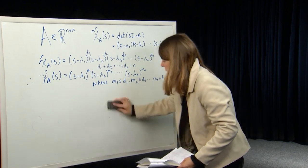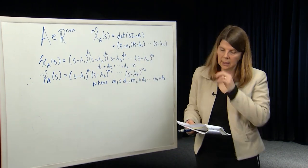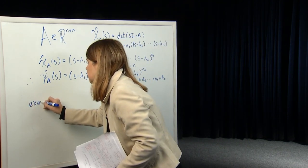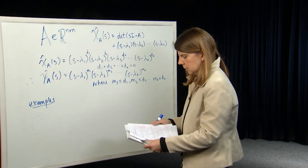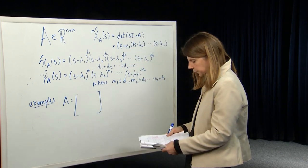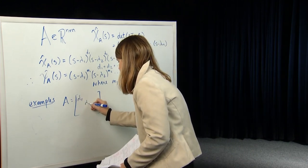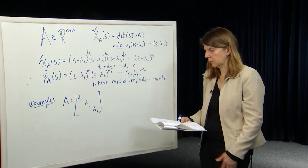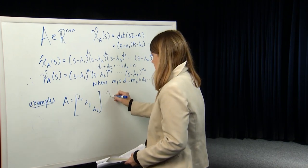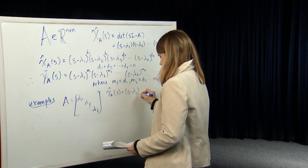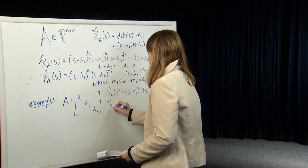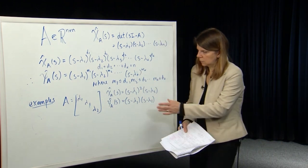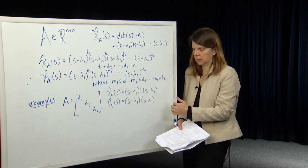Let's do a couple of examples. Suppose you have a diagonal matrix A = diag(λ₁, λ₁, λ₂). The characteristic polynomial, by inspection, is (s − λ₁)²(s − λ₂). But the minimum polynomial is (s − λ₁)(s − λ₂), which has degree two, whereas the characteristic polynomial has degree three.